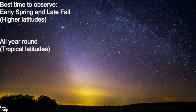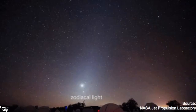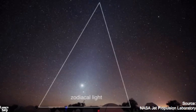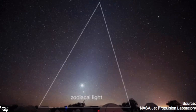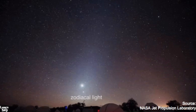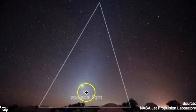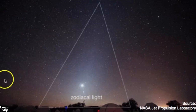In the higher latitudes, it's easier to see the zodiacal light in the early spring and late fall, but if you happen to live in the tropical latitudes, you can see this phenomenon all year round. Zodiacal light often has a conical shape and it forms when sunlight is reflected off the dust in the plane of our solar system. The zodiacal light aligns with the ecliptic, the path of the moon and the sun. Here you can see two planets right within the zodiacal light — that's Venus and Mars right here.